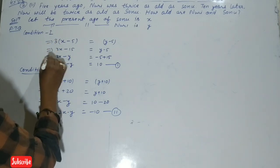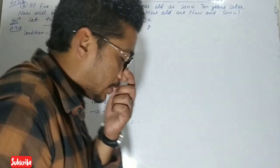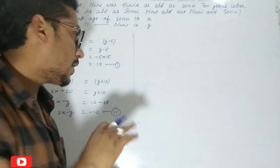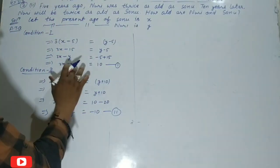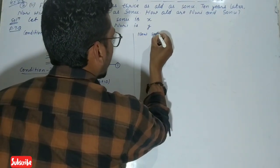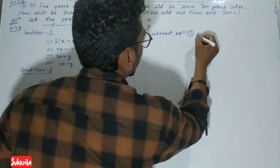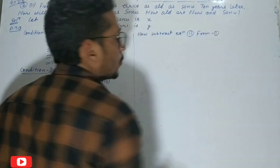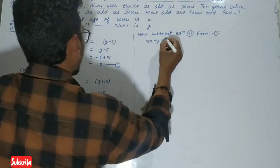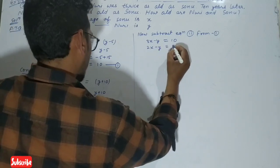This is equation 1 and this is equation 2. Now we have to solve using the elimination method. You can see both equations have minus y. We will subtract equation 2 from equation 1.